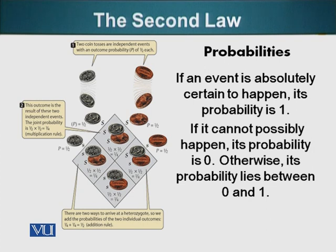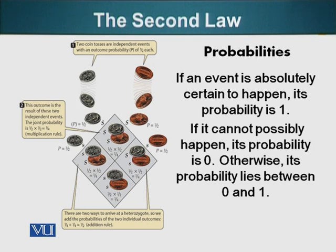Now let's look at the case where one coin is heads and the other is tails. When two events can happen in two different independent ways, we add the probabilities. We can achieve one head and one tail in two ways: the penny is heads and the dime is tails, or the penny is tails and the dime is heads. Adding those probabilities: one quarter plus one quarter — 0.25 plus 0.25 — equals 0.5. So 50% of the time, one coin will be heads and the other will be tails. Similarly, the probability of having two tails is also 0.25.